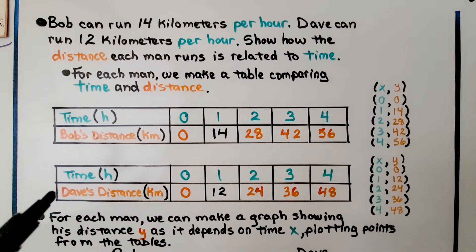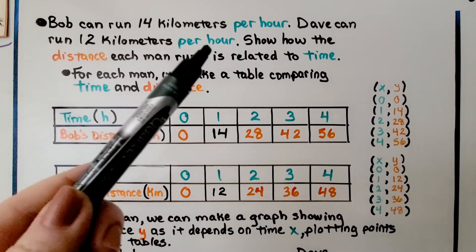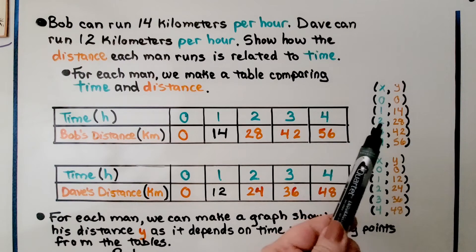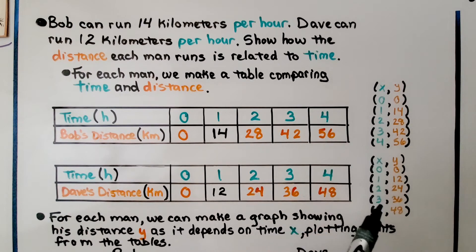Here's Dave's table. It says he can run 12 per hour. So we have 1 for 12. So we can make ordered pairs from the information in the tables.